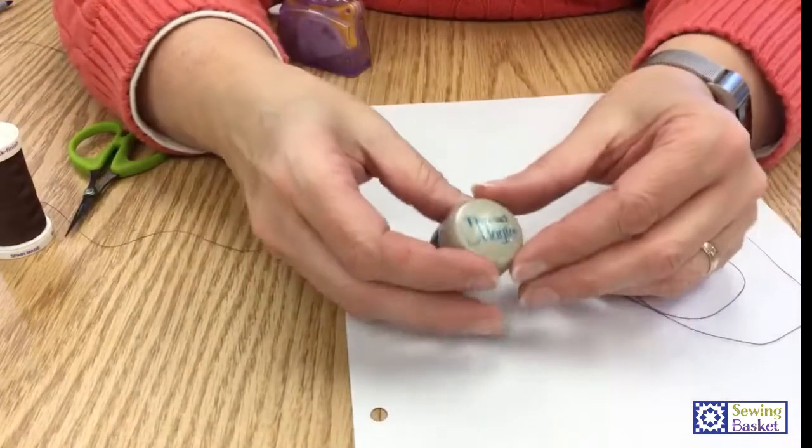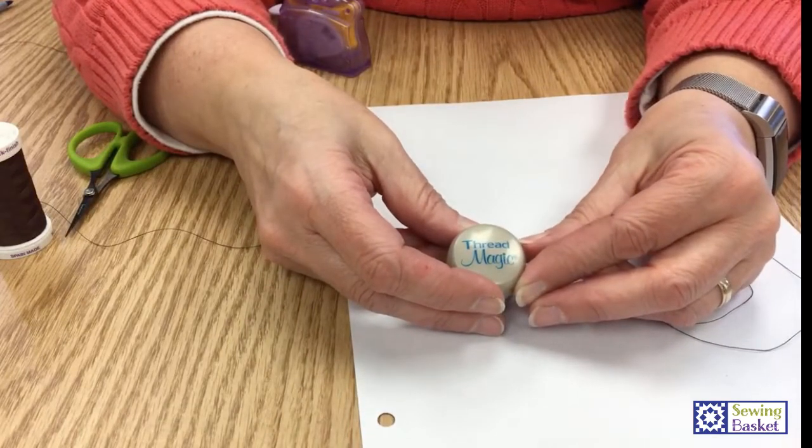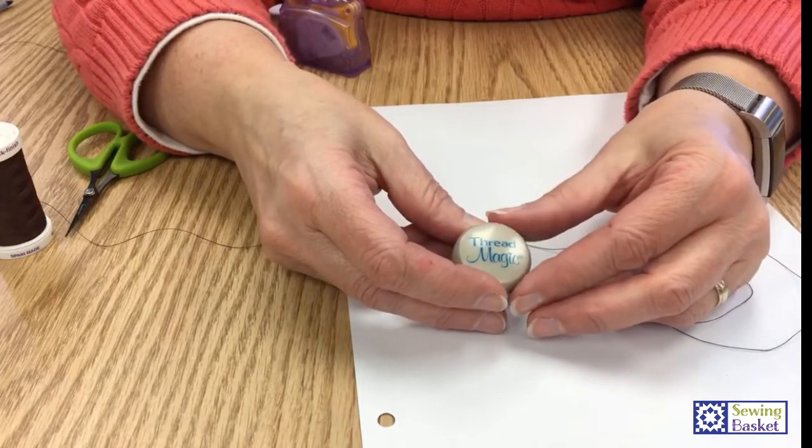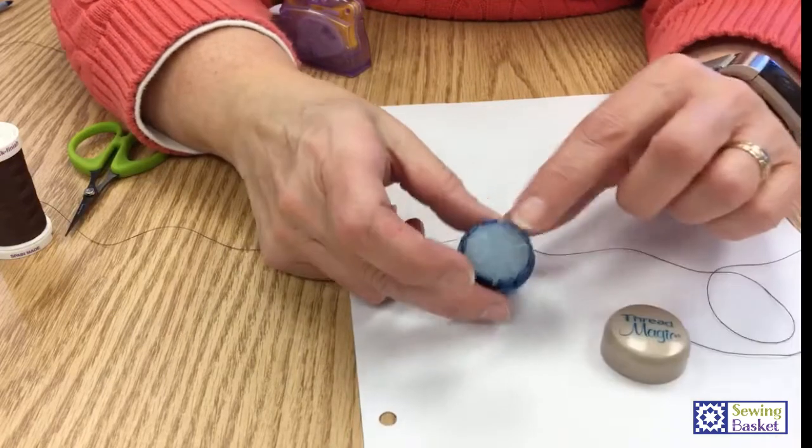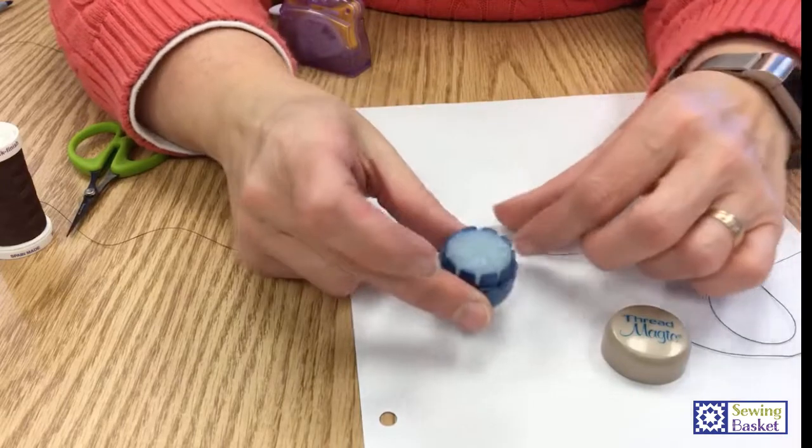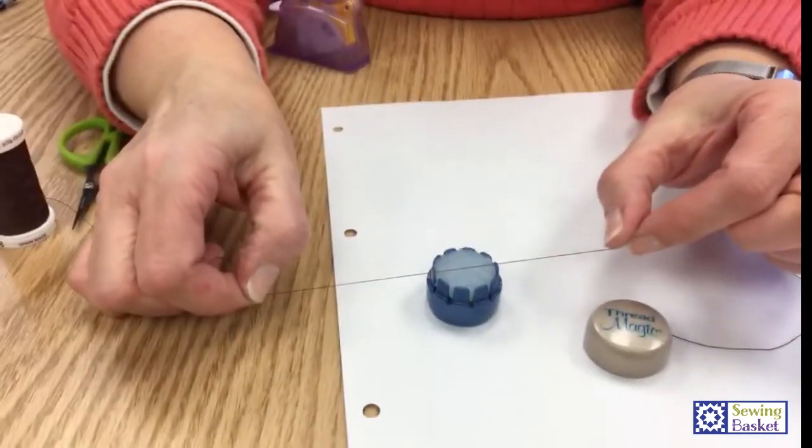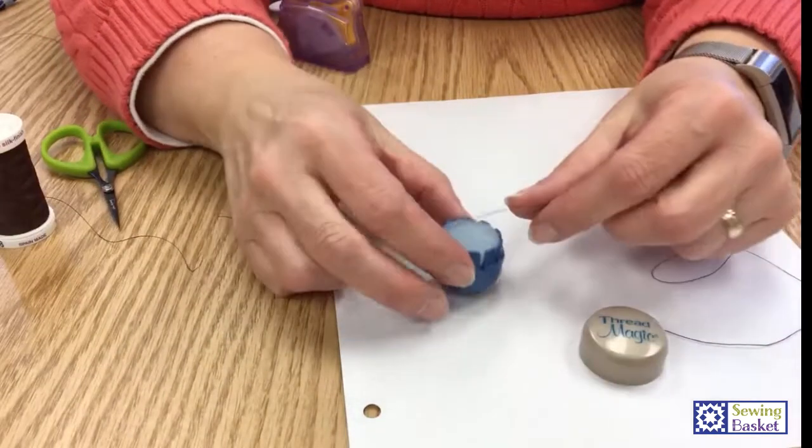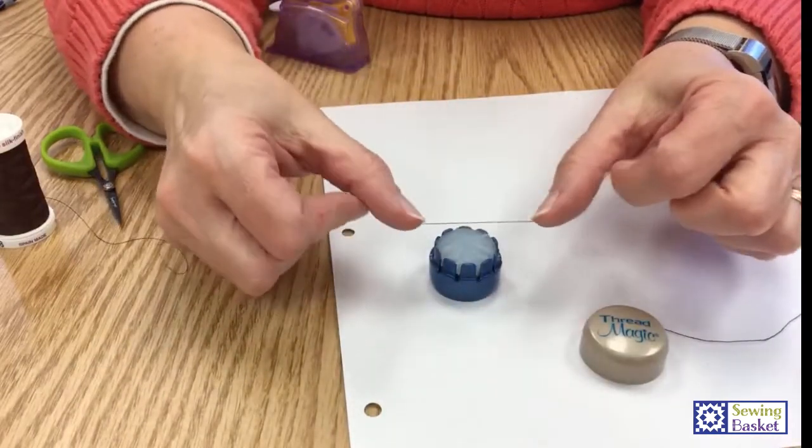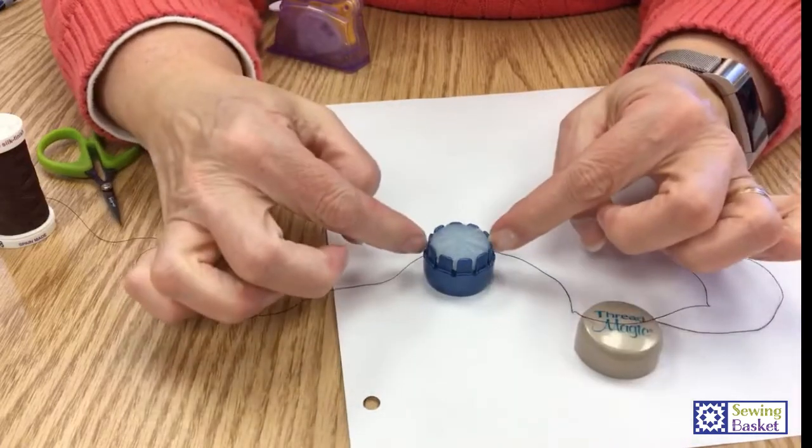Then we also have this product called Thread Magic. This is for if you're doing a lot of hand sewing. Years ago they used to use beeswax or some different sort of wax. This is a synthetic wax, but it's going to coat your thread so it just makes it a little stronger and a little easier to glide. This little container has slots on it, so what I'll do if I'm going to do a lot of hand sewing is I'll just put it down in between one of those slots.